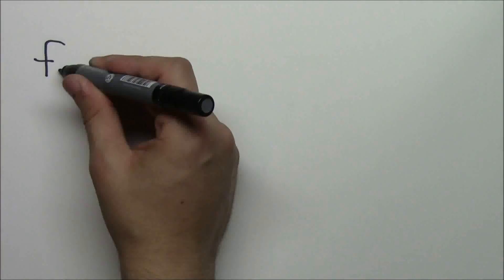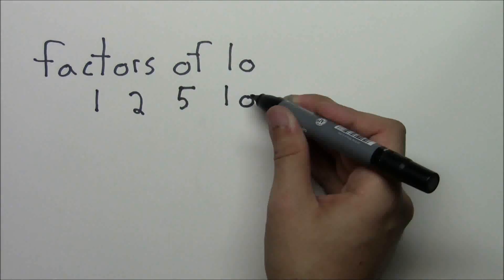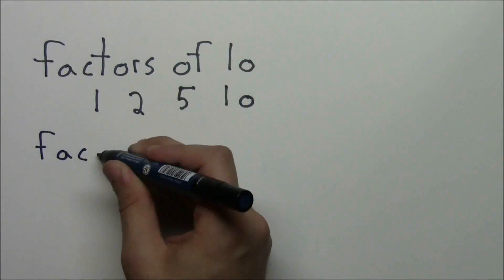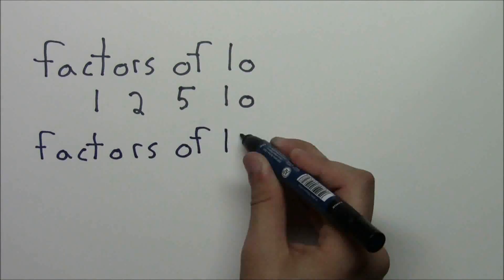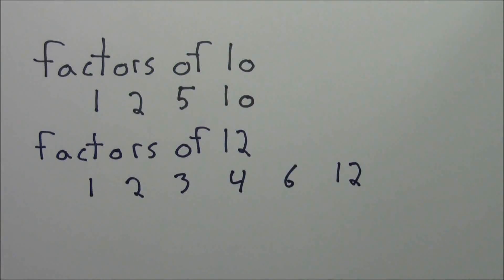Let's start by looking at the factors of 10. We have 1, of course, 2, 5, and then 10. But let's look at the factors of 12. We have 1, we also have 2, as well as 3 and 4, then 6, and of course 12. This makes everything so much easier.